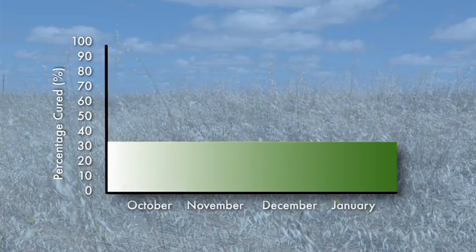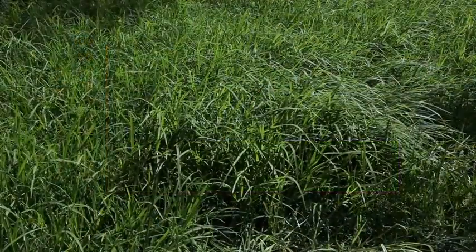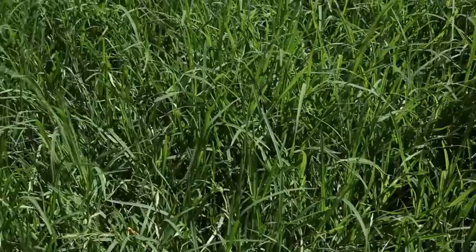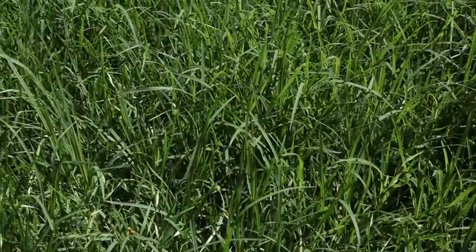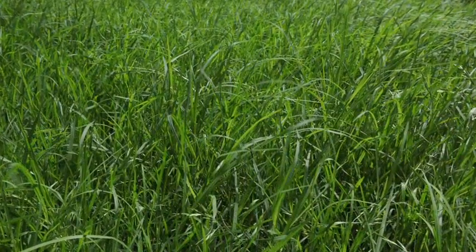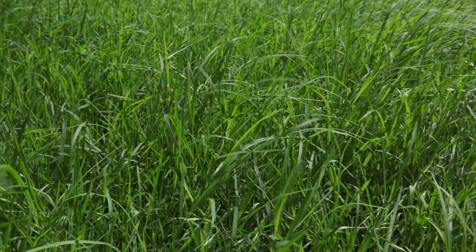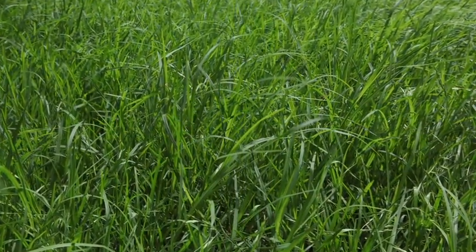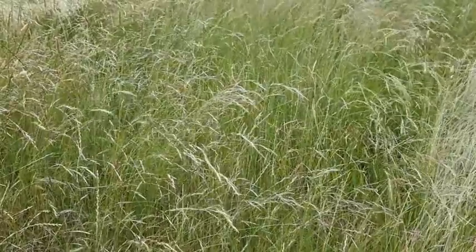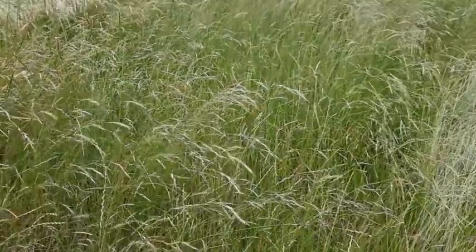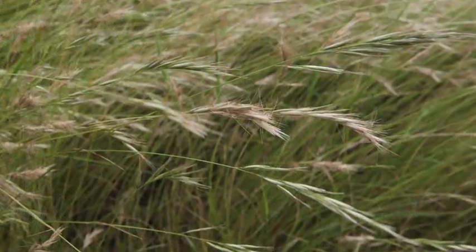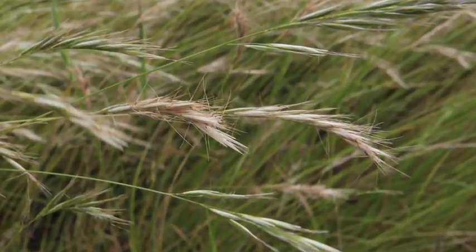Let's look at the green phase. This is when the grass is between 0 and 30 percent cured. Here is an example of grass at 0 percent — as you can see the grass is all green and there are no seed heads at all. This is grass at 30 percent cured, with some yellow showing and well-developed seed heads which are starting to drop seed.